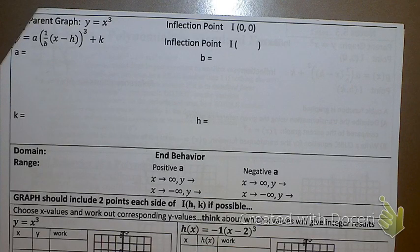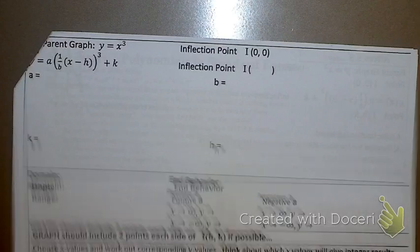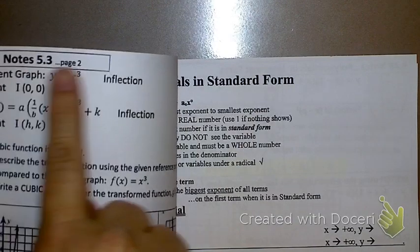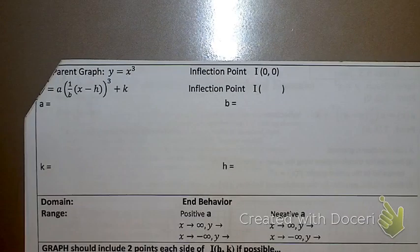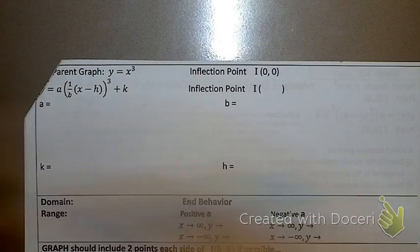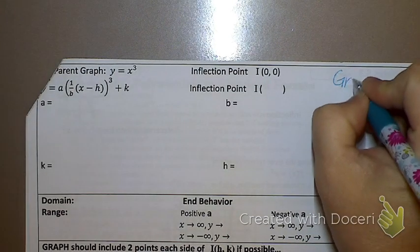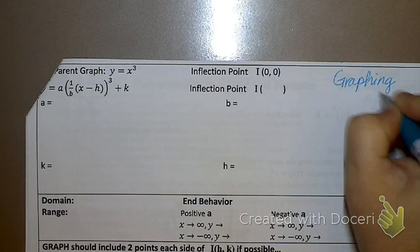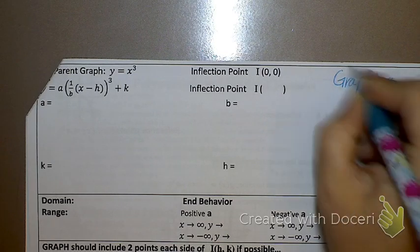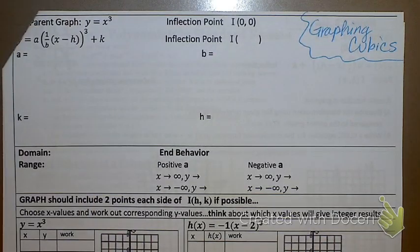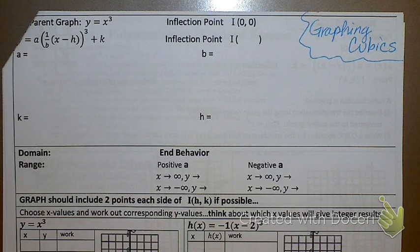This is our 5.3 notes. The title got cut off, but on the next page you can see it says notes 5.3 page 2, so hopefully you can deduce that this is page 1 of 5.3. What 5.3 is all about is graphing cubics. From day 1 of the school year you learned what a cubic was — a degree of 3. So this is graphing polynomials that have a degree of 3. We're going to learn about some specific things with regards to cubics.